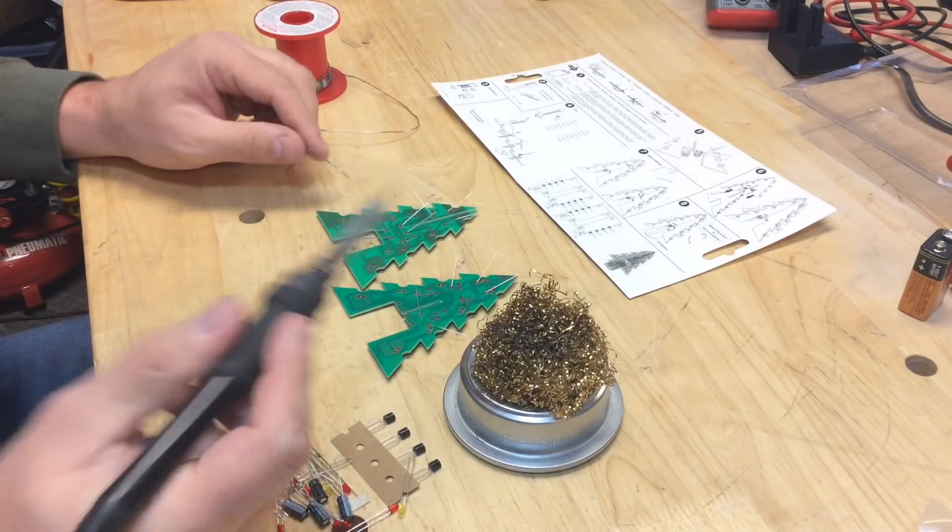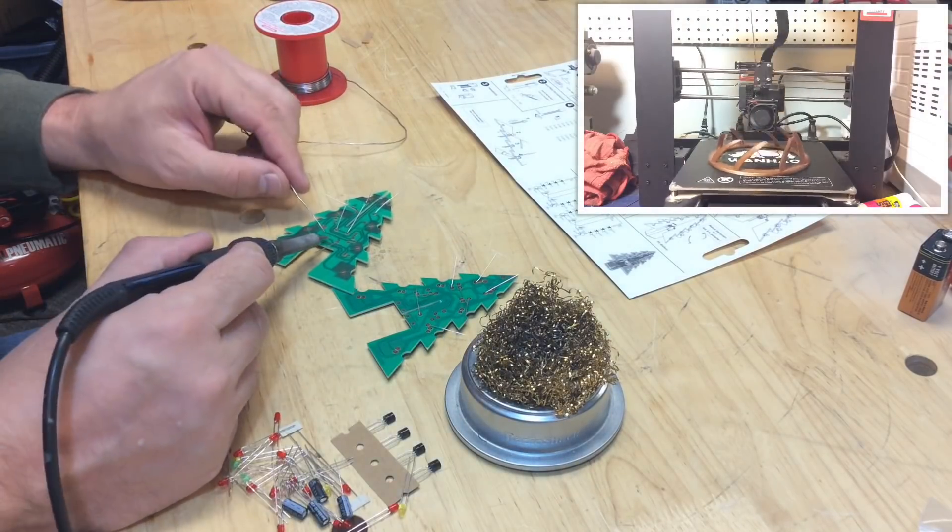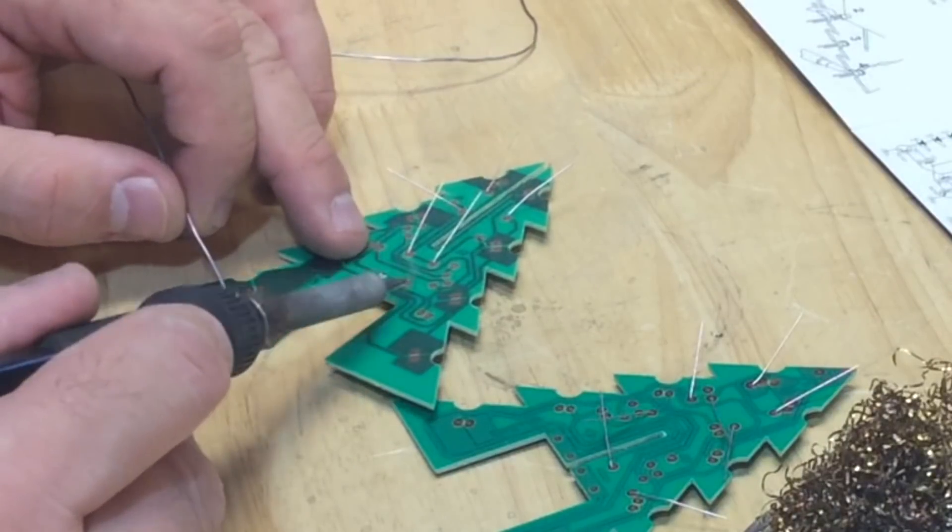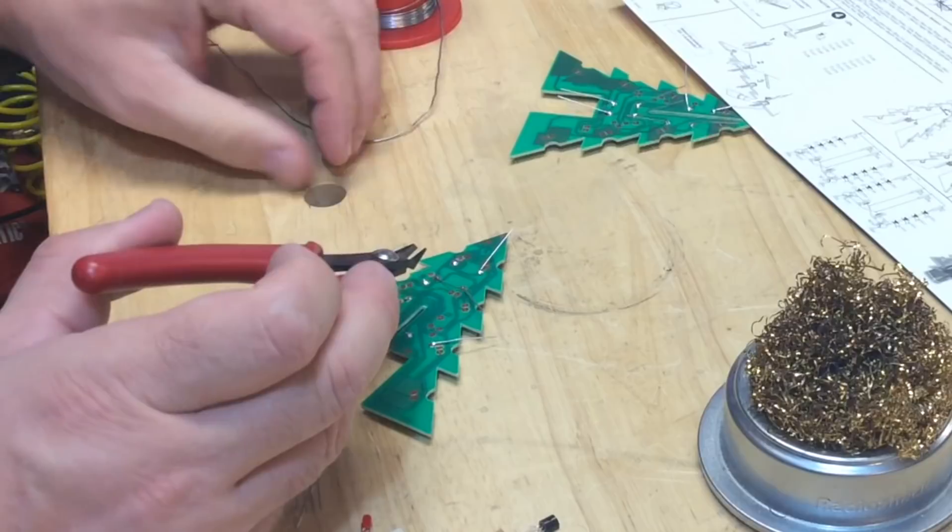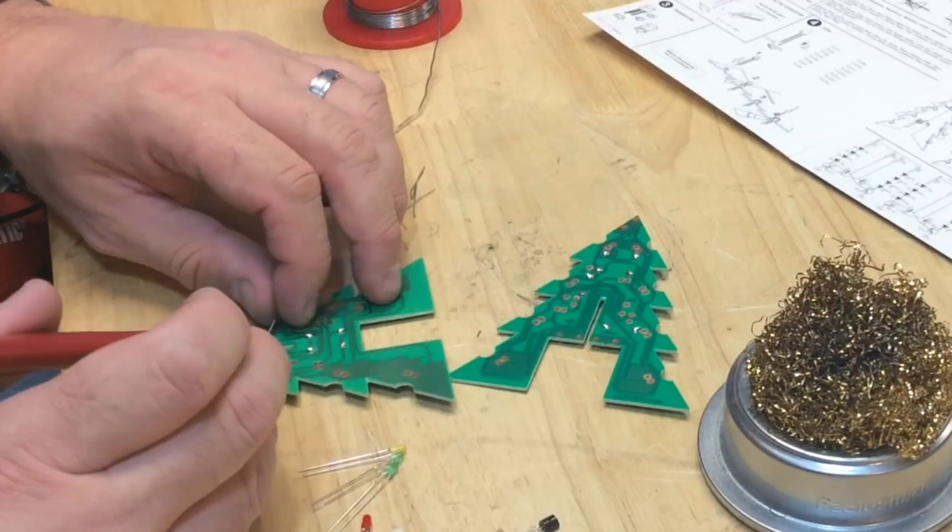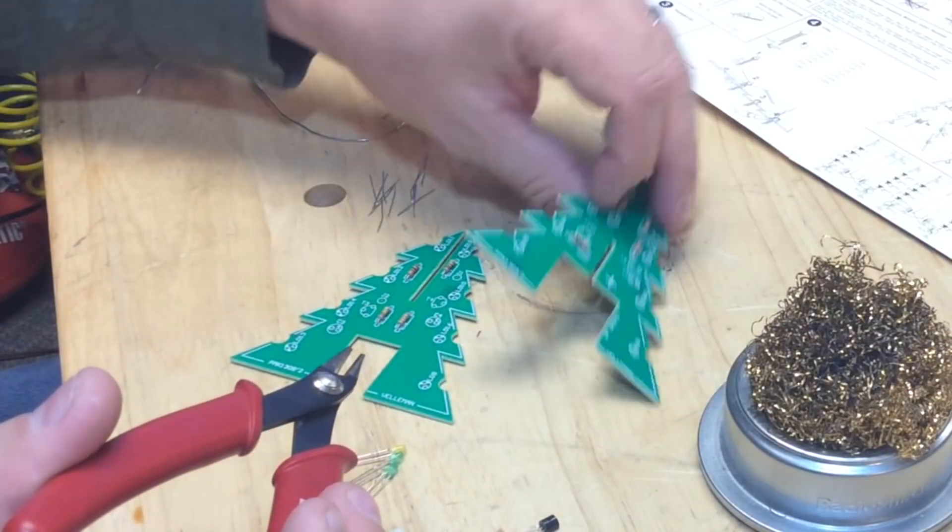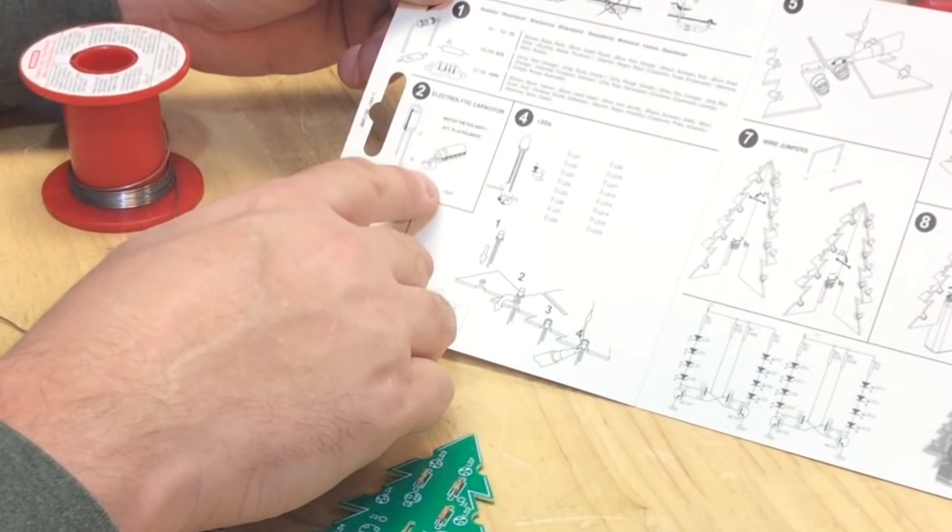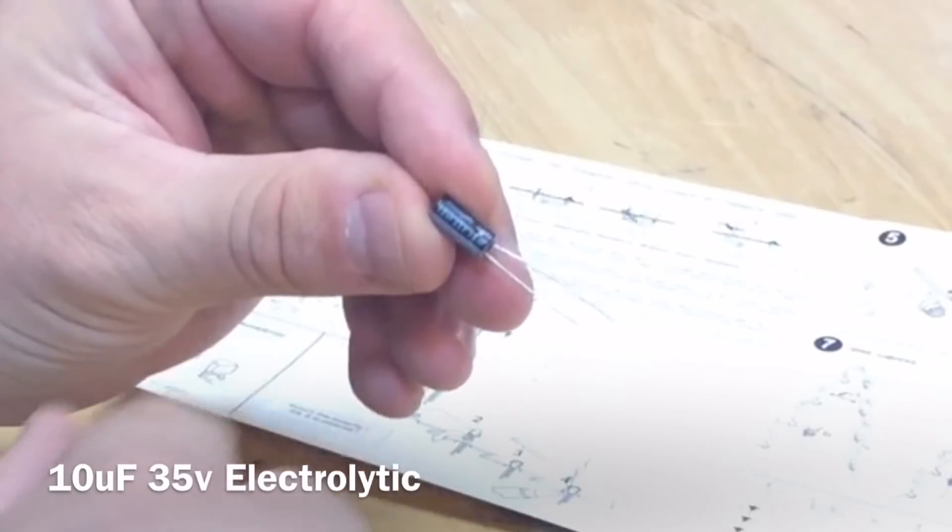Once I had that in place, I got out the soldering iron and started soldering these in place. Now these pads are bare copper, so it solders a little bit tougher, but it wasn't too bad. Once I got things heated up and going, it was easy. Then I just got on my clippers, clipped the leads, and I was ready to move on to step 2, which was the electrolytic capacitor.